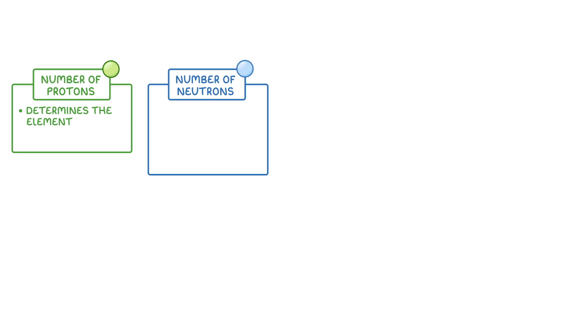So now that we know that it's the number of protons that determines which element it is, what about the number of neutrons? Well, the number of neutrons can actually vary between the individual atoms of an element. As long as the number of protons remains the same, it's still the same element, and we call these different forms of that element isotopes.